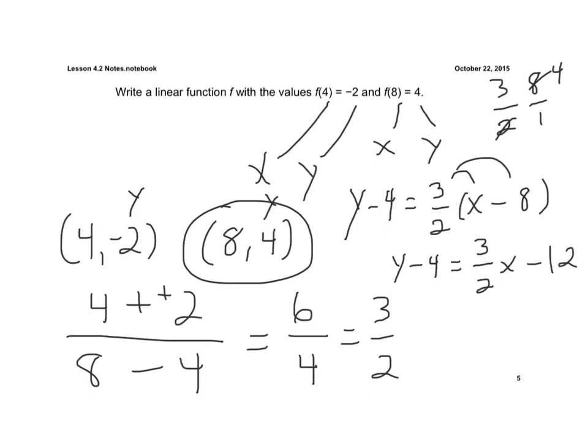Now I'm not quite done because I want to make it y equals. So I'm going to add 4 to both sides. Again, make sure I'm adding my like terms. So my final answer is y is equal to 3 halves times x minus 8.